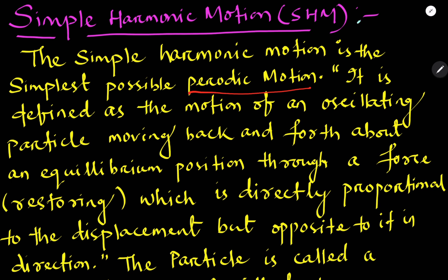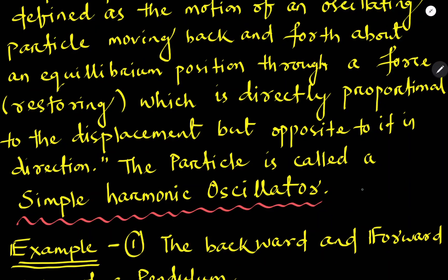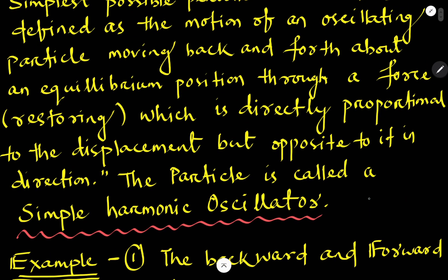Simple harmonic motion is defined as the motion of an oscillating particle that moves back and forth about the equilibrium position through a restoring force, which is directly proportional to the displacement and opposite to the direction of the particle. This particle is known as the simple harmonic oscillator, or SHO.